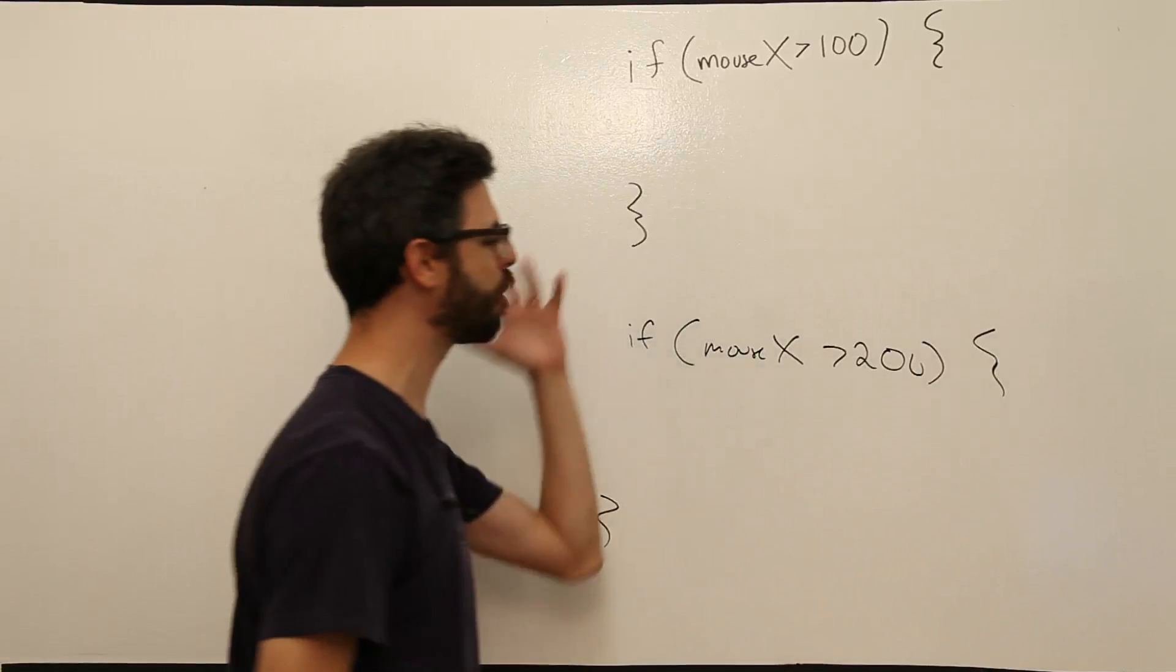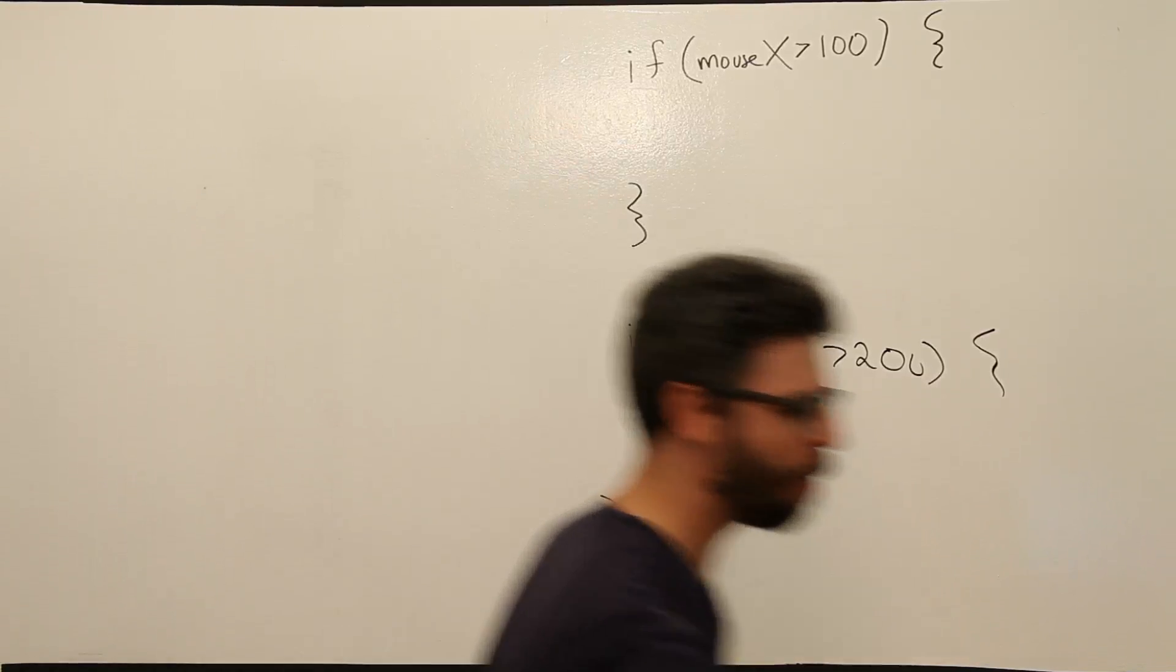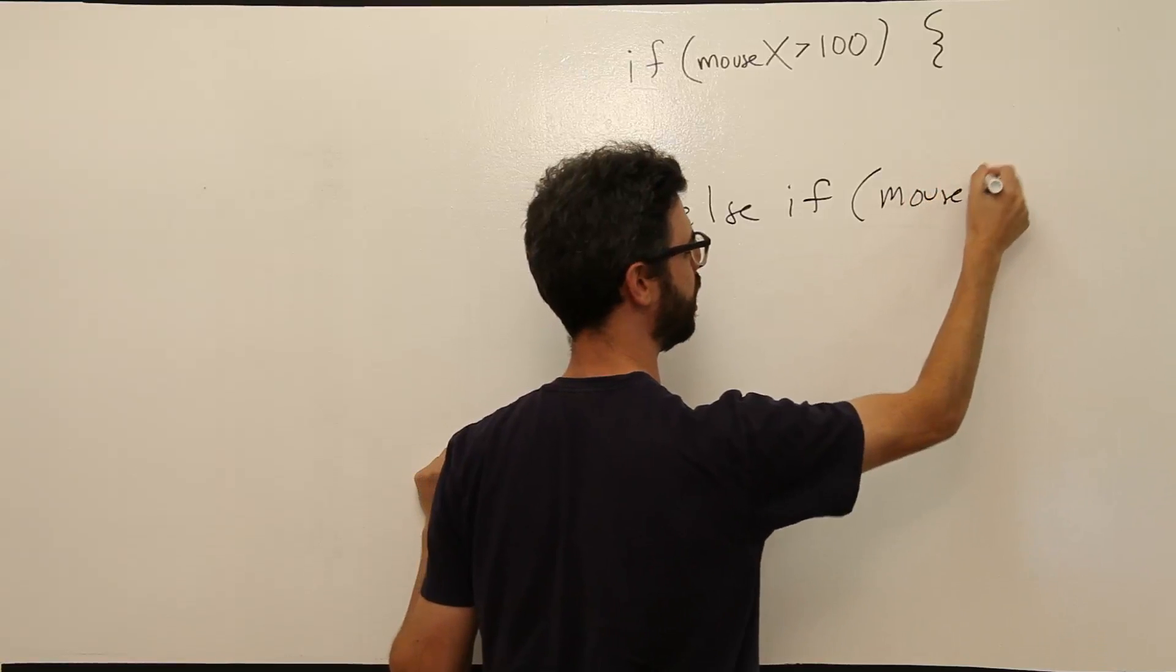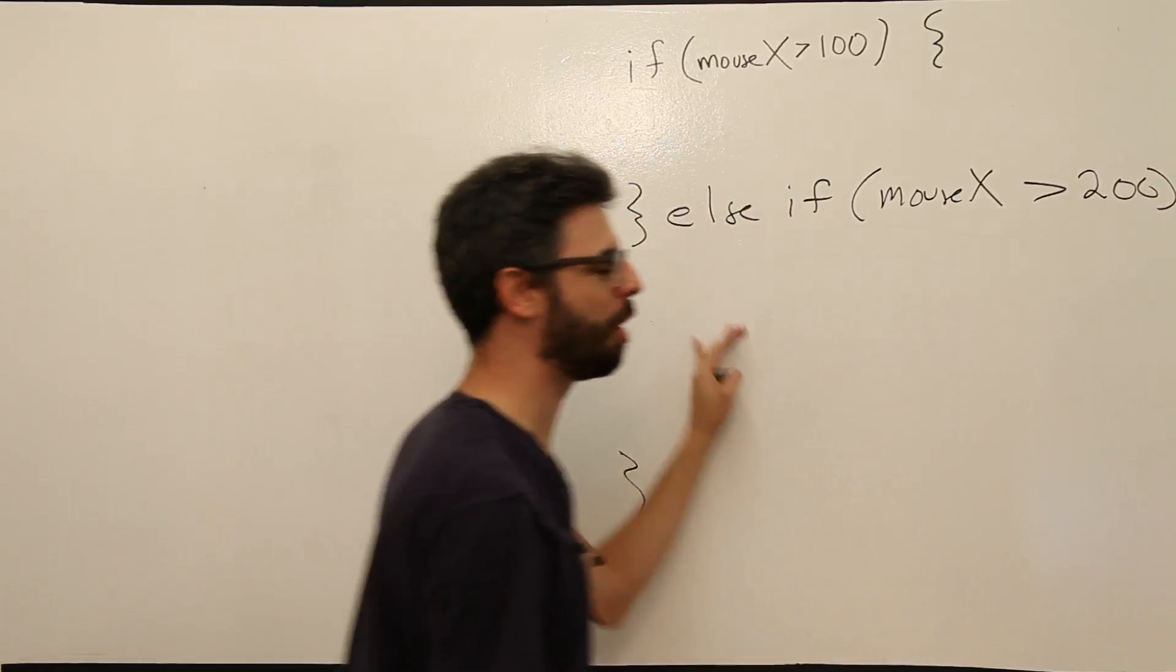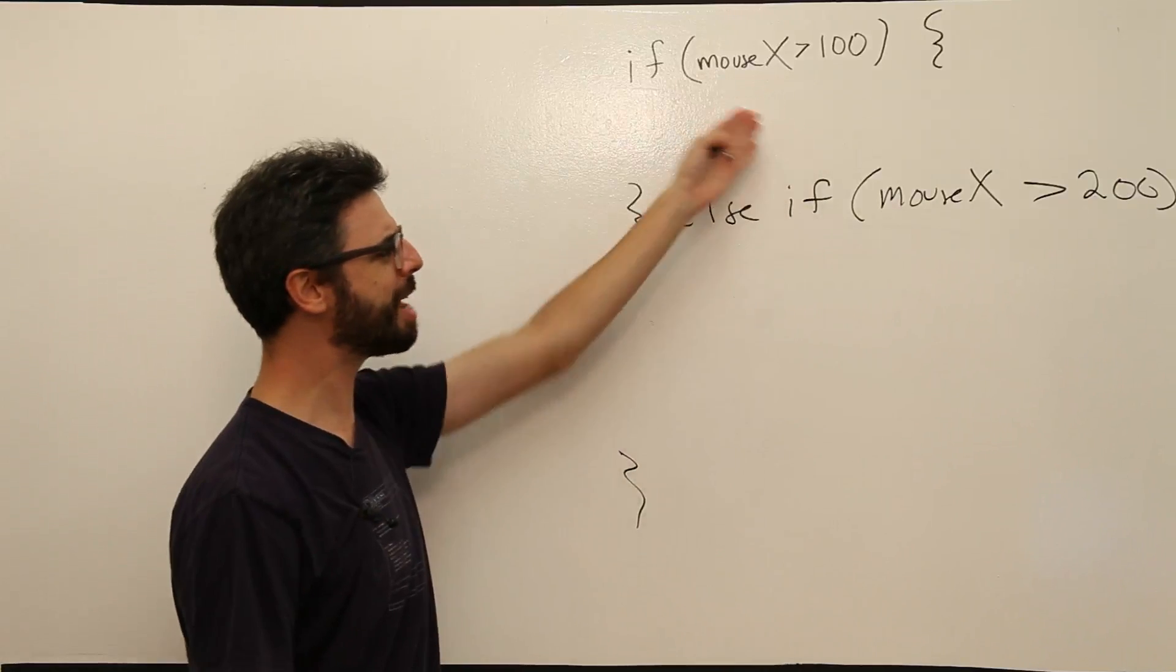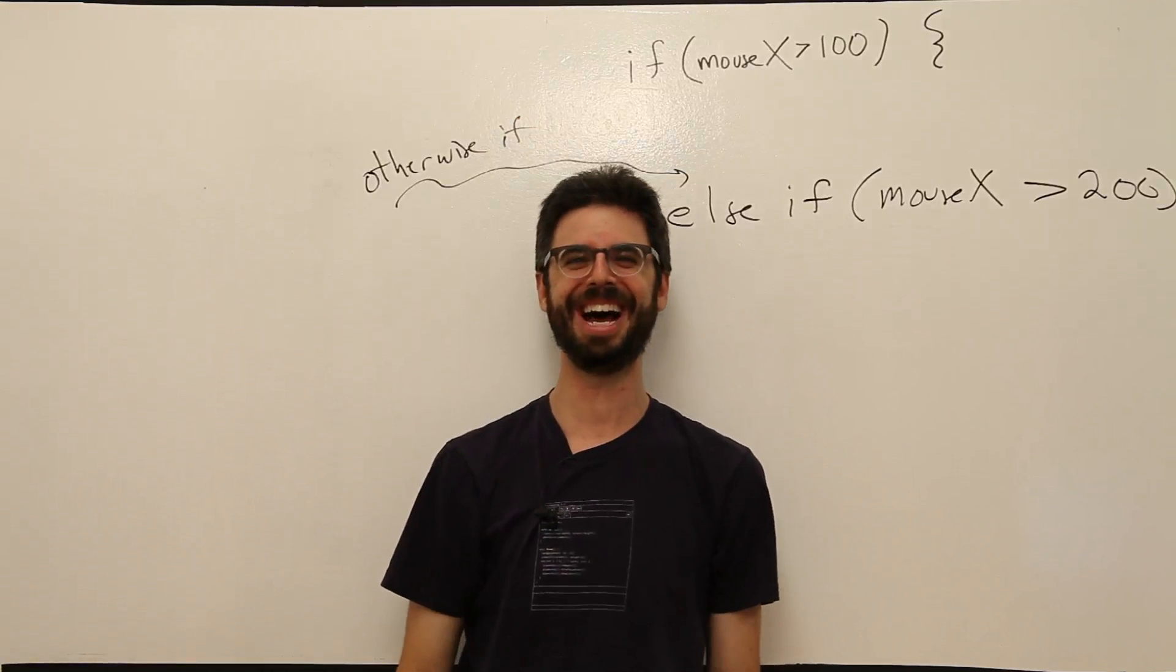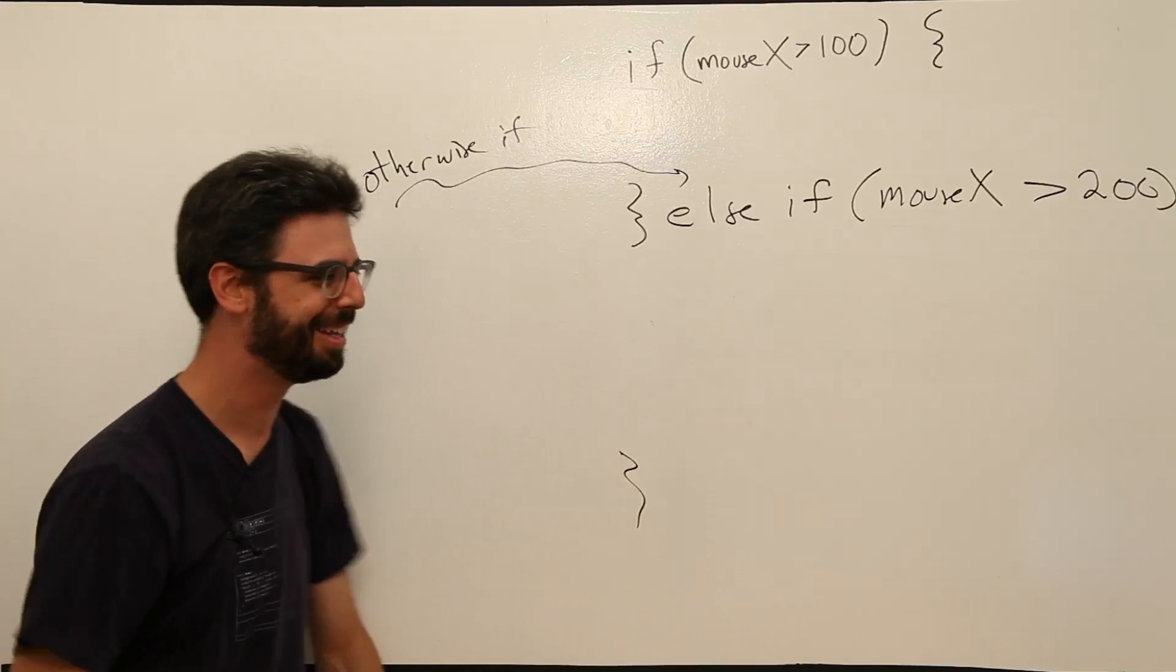There is another way we could start to make this code work slightly differently. What if we want to exclusively only execute one of these? What if we want to say this: else if mouse x is greater than 200. Now, this looks similar if the mouse is greater than 100, if the mouse is greater than 200. If the mouse is greater than 100, else if the mouse is greater than 200. We can think of this else if as the word otherwise. Otherwise, if.